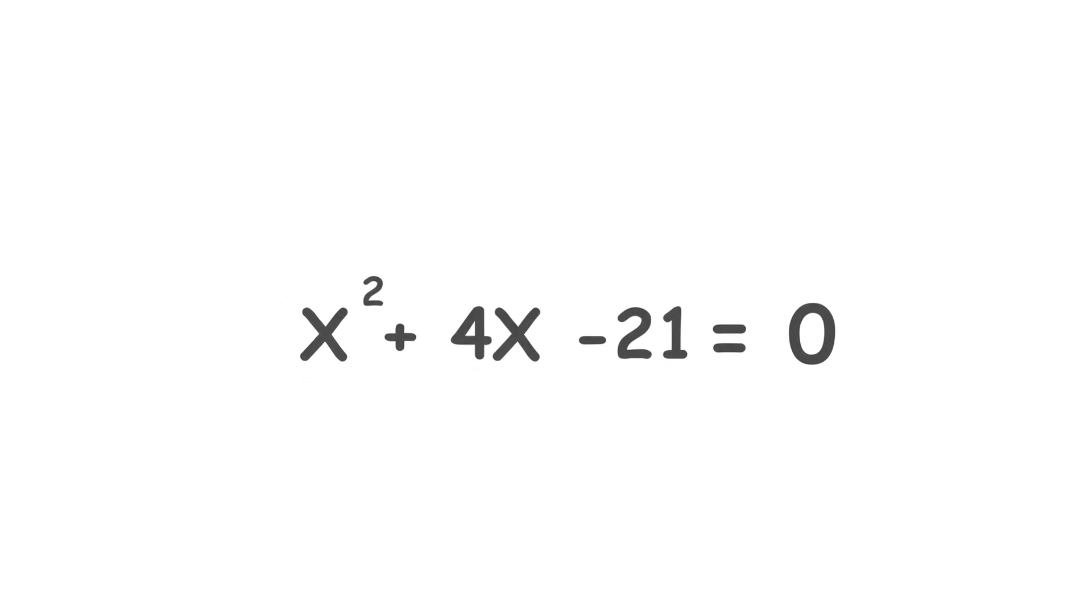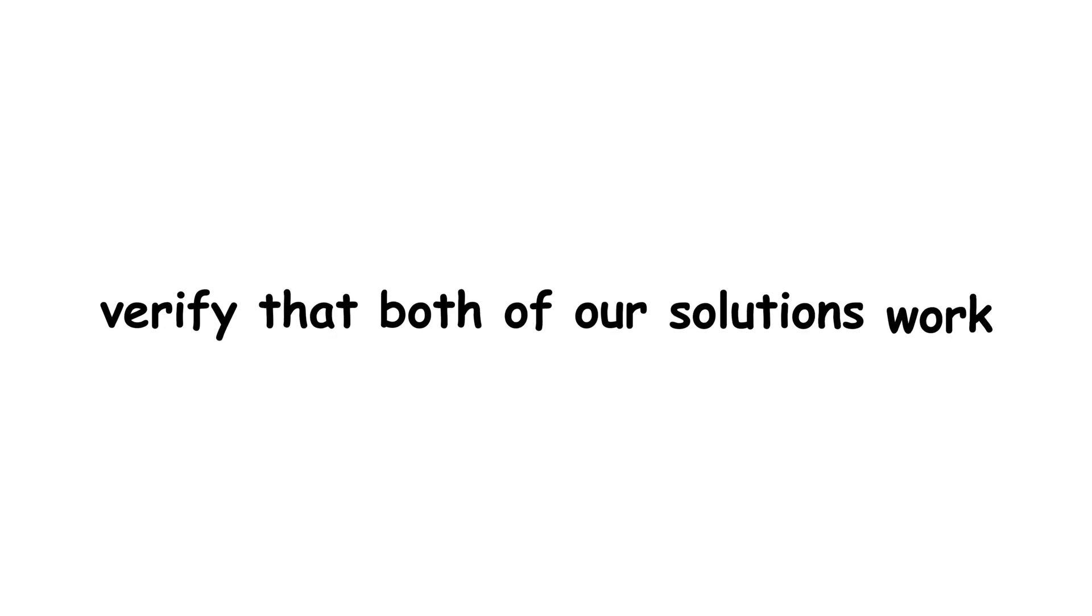Let's bring back the original equation: x squared plus 4x minus 21 equals 0. And verify that both of our solutions work.